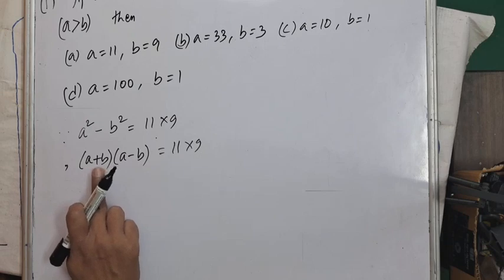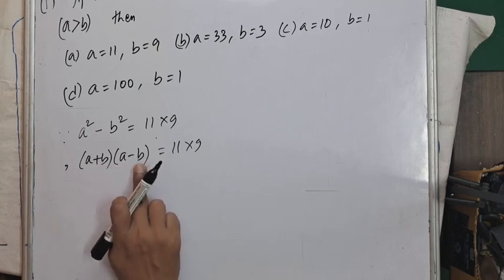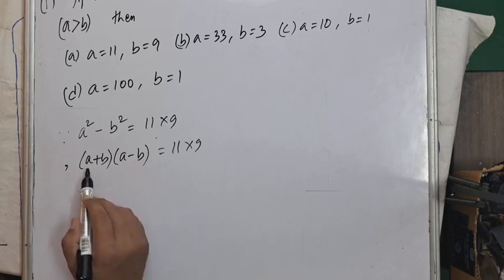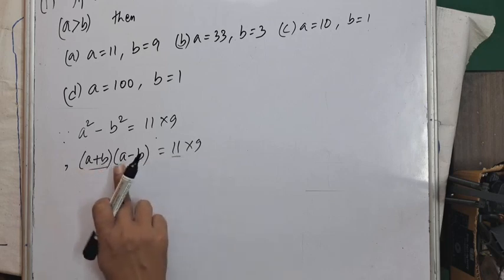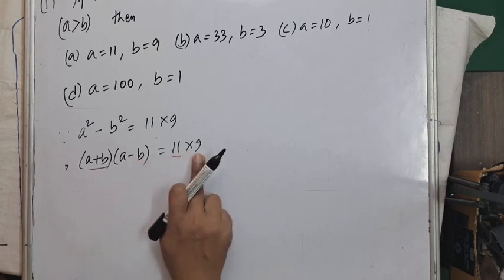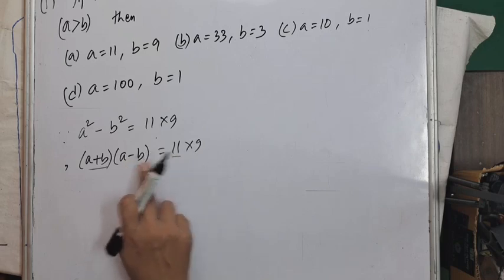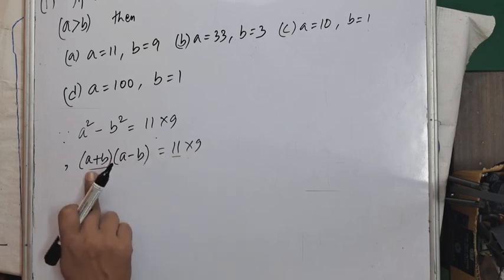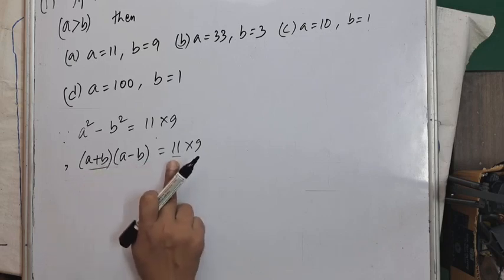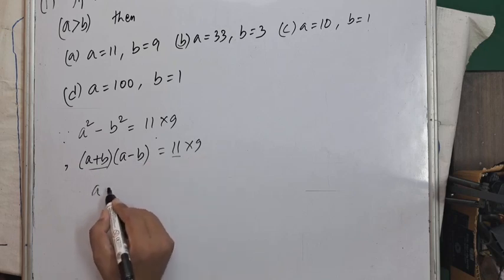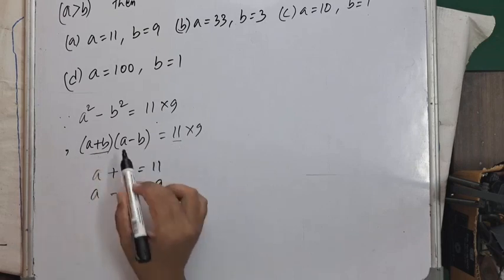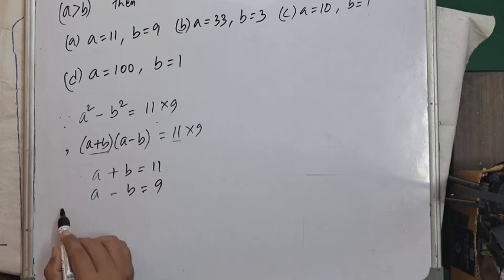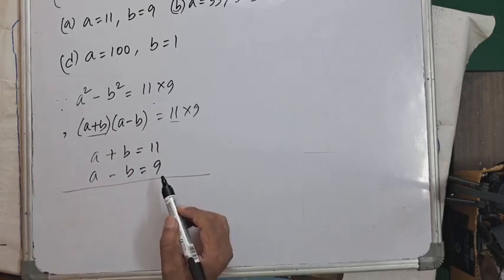Since (a+b) is the sum and (a-b) is the difference, the sum must be greater than the difference. So a+b = 11 and a-b = 9. This gives us a simple simultaneous equation.